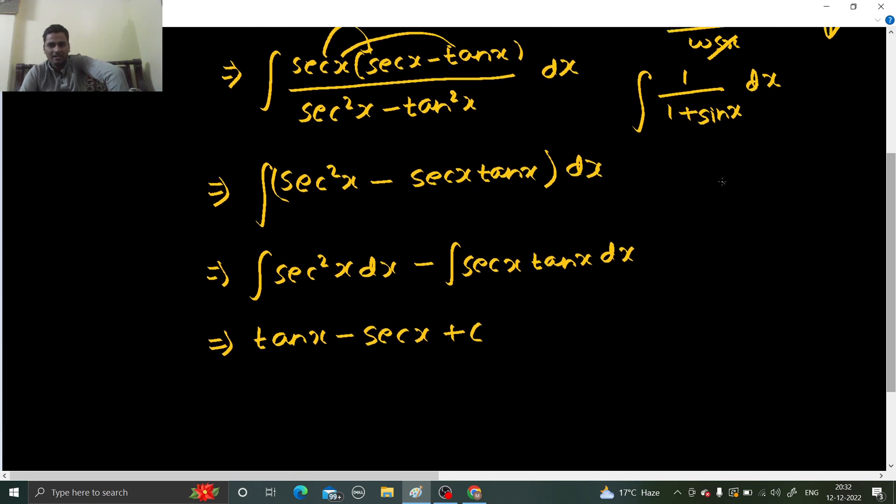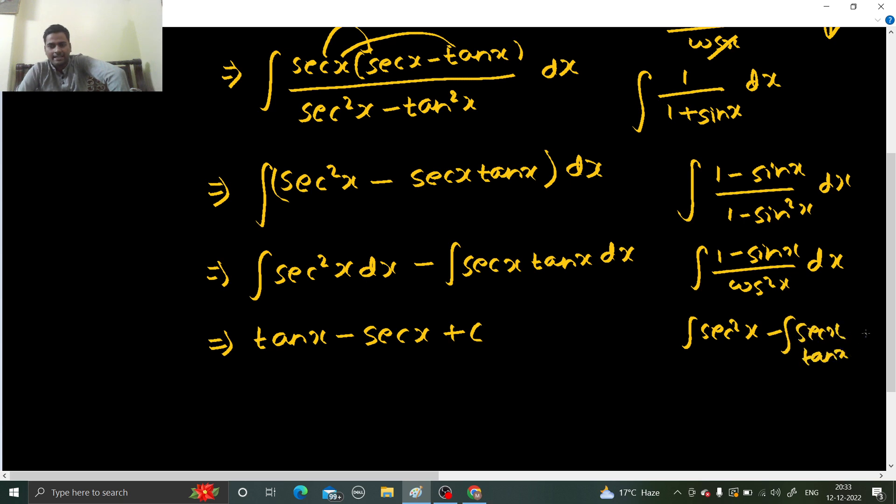This was also not left by me because if you multiply by 1 minus sin x in numerator and denominator, you are going to get something like this. Now this is 1 minus cos square x dx, 1 by cos square x is secant square x, sin by cos is tan and 1 by cos is secant x tan x. And there you get the same step which you have been getting here.